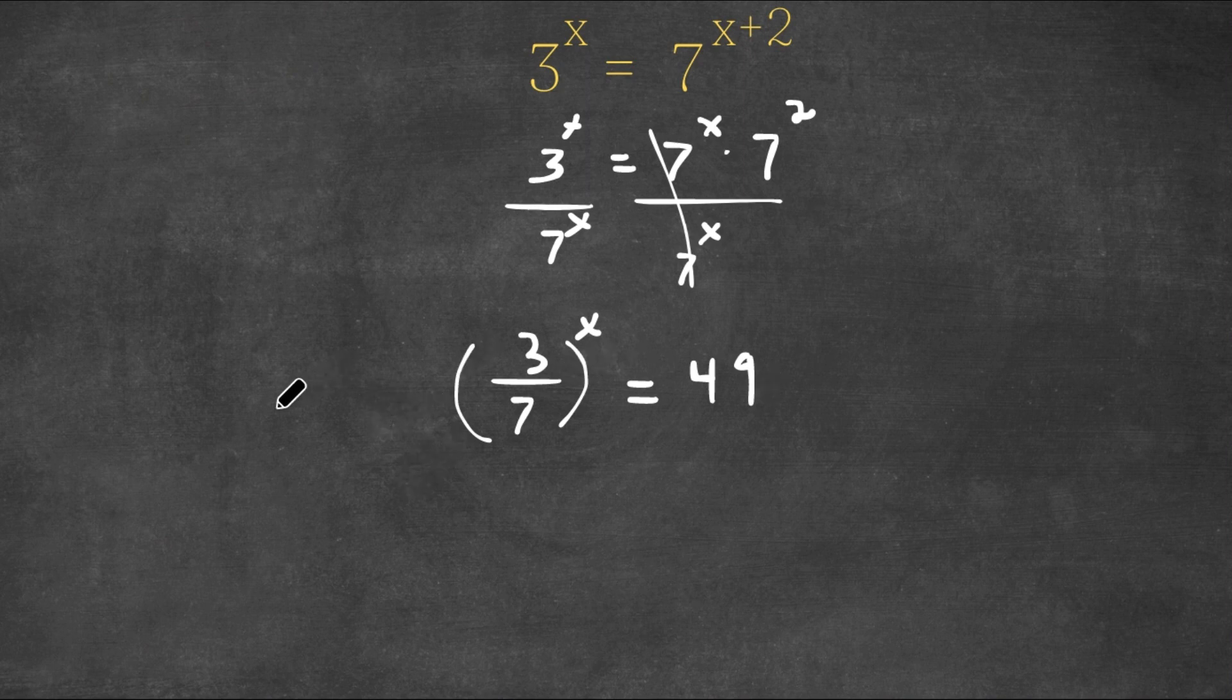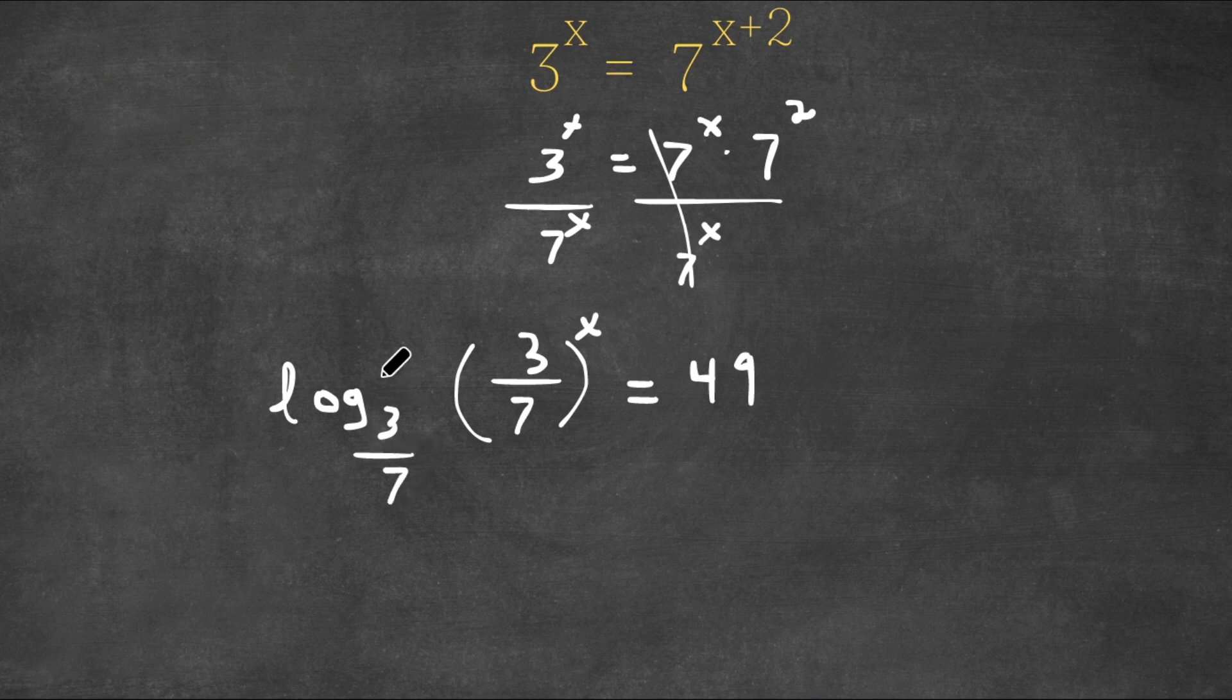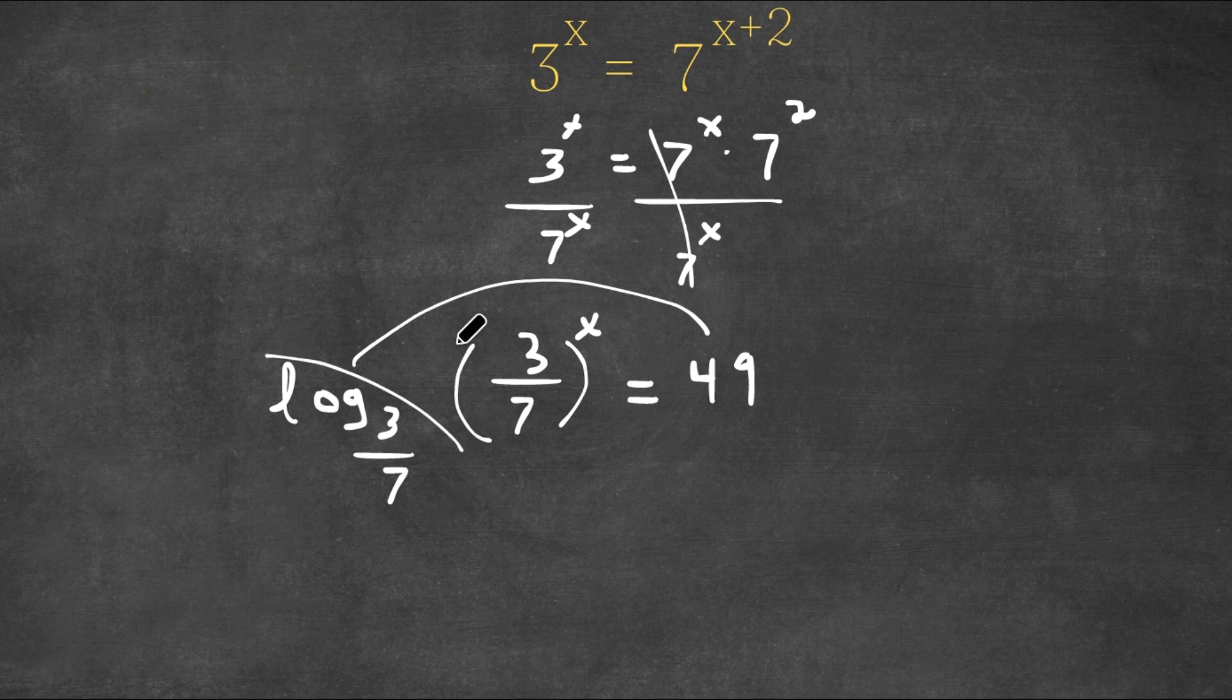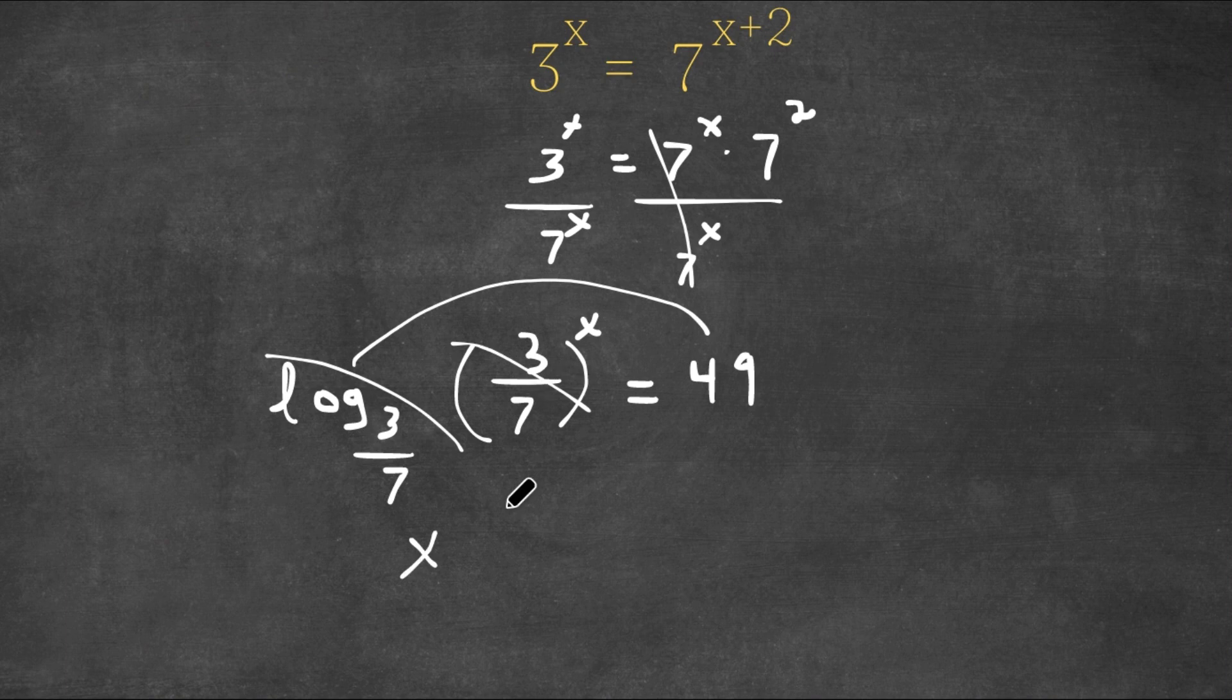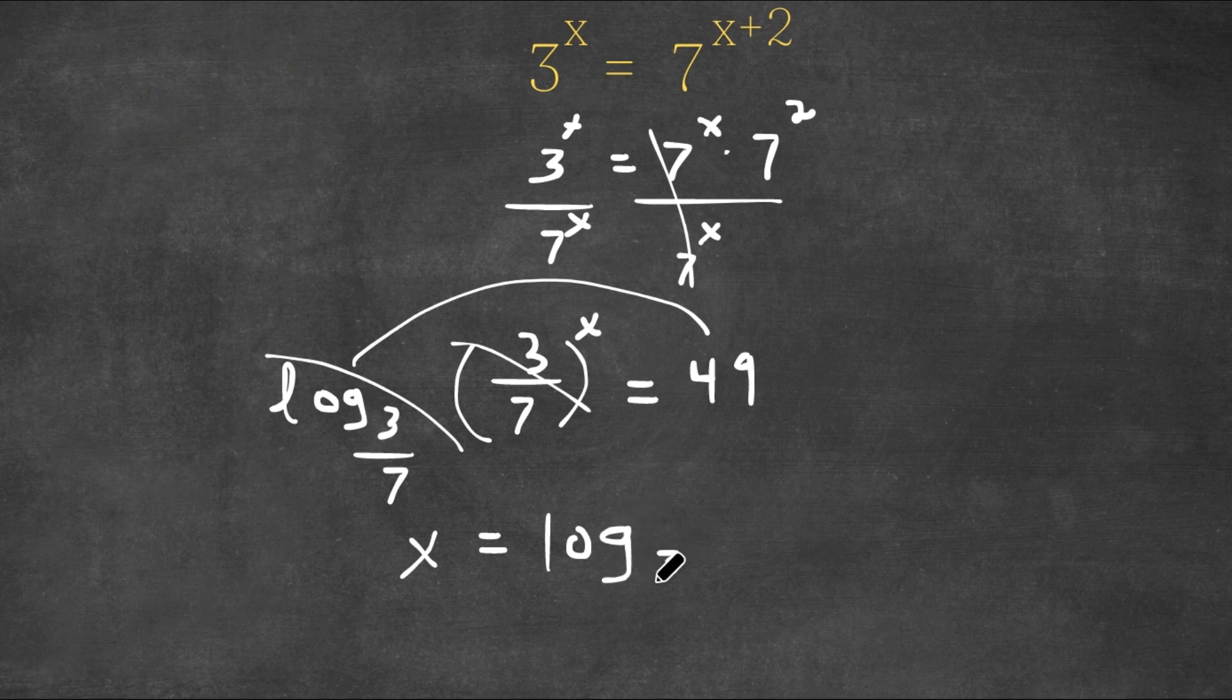Now, if I take the log with base 3 over 7 on both sides, these two cancel out. For the left-hand side, I would have x, and for the right-hand side, I would have log base 3 over 7 of 49.